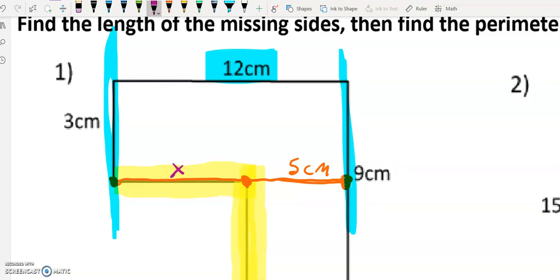How could I use that information to figure out the missing link here? Well, if this whole thing is 12 centimeters, this is 5 centimeters, then x plus 5 must equal 12.